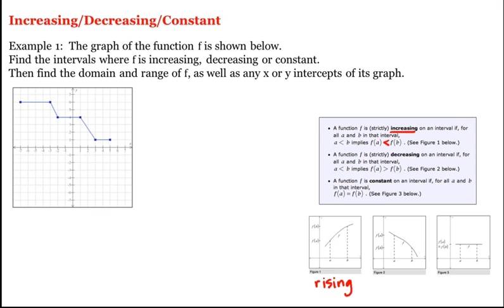A function is said to be decreasing on an interval if the y value at a is larger than the y value at b, for any a less than b. Looking at the graph, that means the graph is falling from left to right. And a function is said to be constant on an interval if for all a and b in that interval, f(a) is equal to f(b), meaning the graph will be horizontal on that interval.